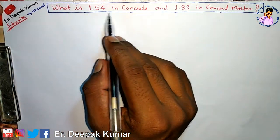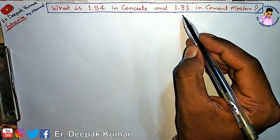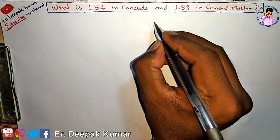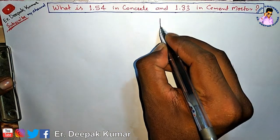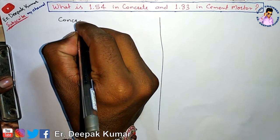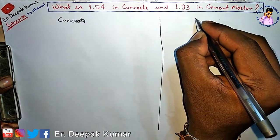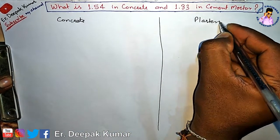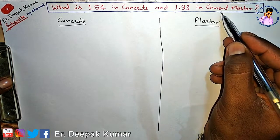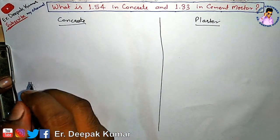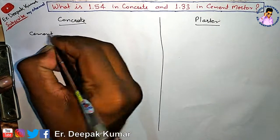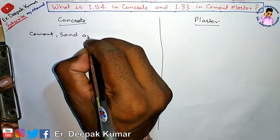Today's topic is: what is 1.54 in concrete and 1.33 in cement mortar? First, I make a column — this is concrete, and this is for plaster. Concrete and plaster, which is cement mortar — a cement and sand mixture. In concrete, here is cement, sand, and aggregate.